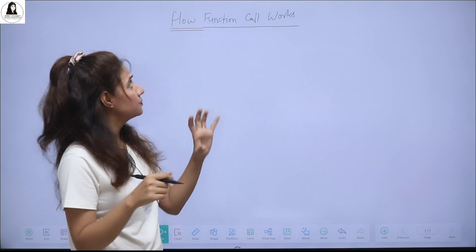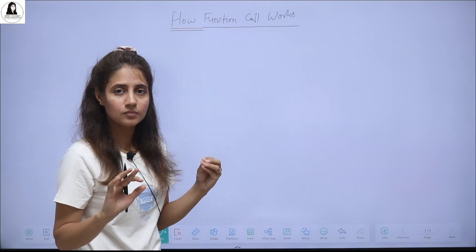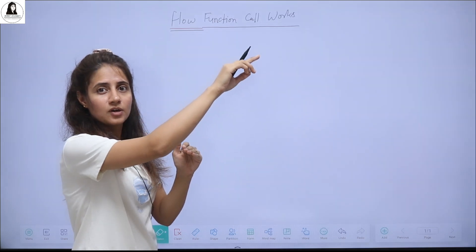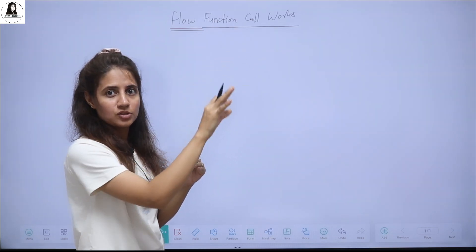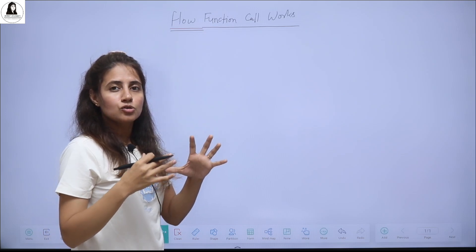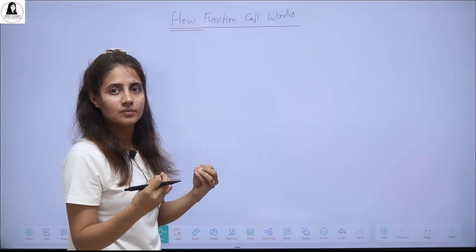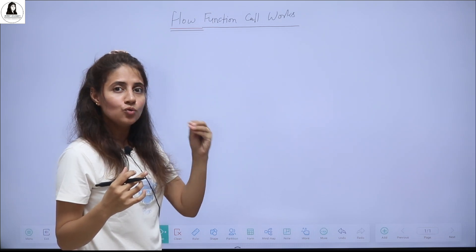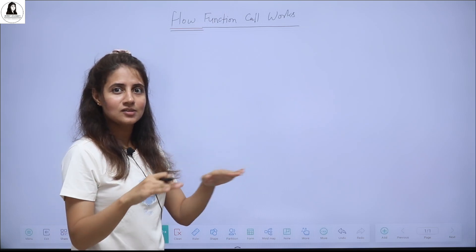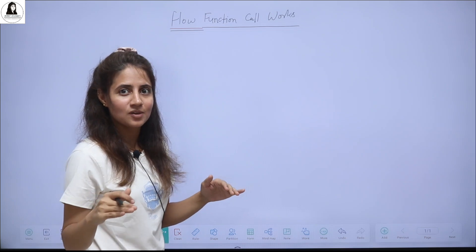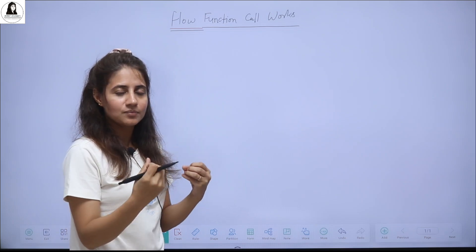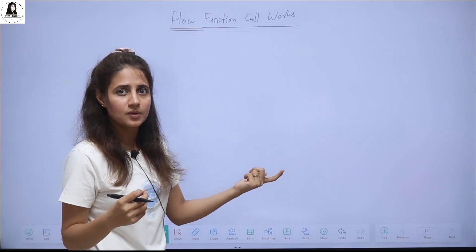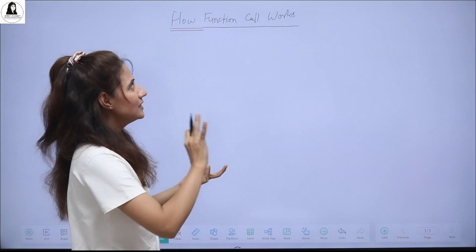Now in this video we will discuss how a function call actually works. Like we call a function in main, the control passes to another function, that function does some computation or processing and returns some result. So how is this actually working — what is happening behind the scene? You need to somewhat understand this, even though these things work on layers of abstraction.